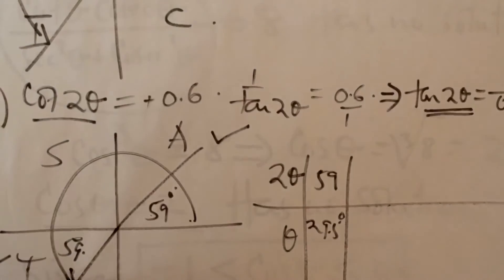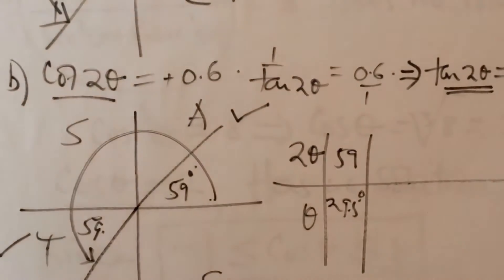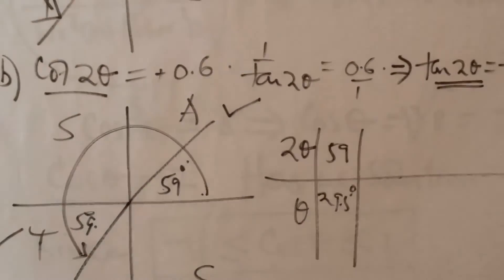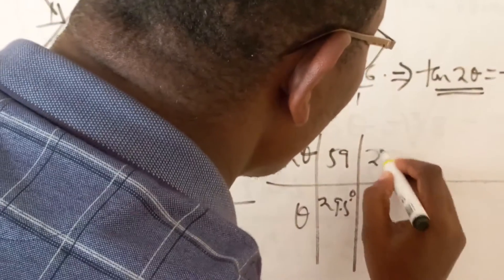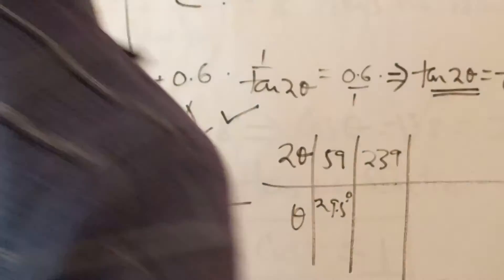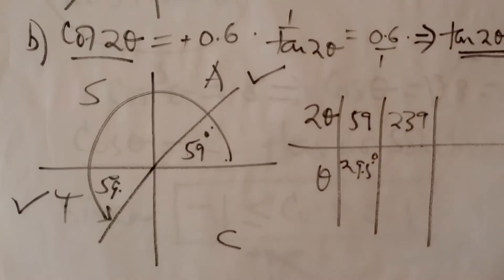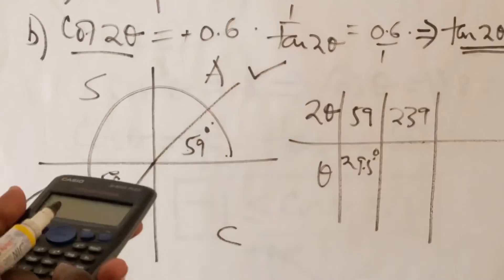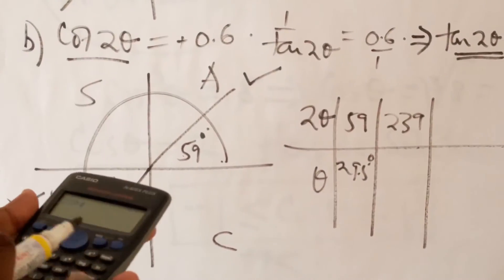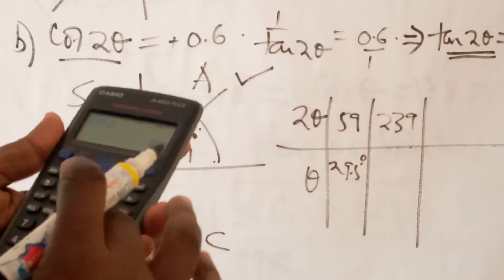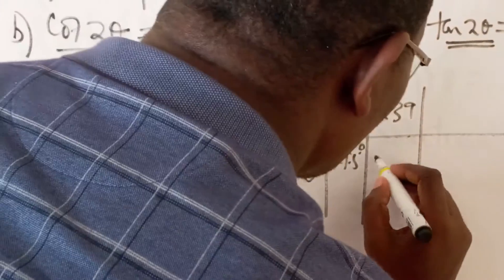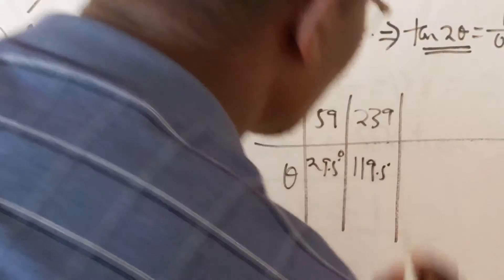At the same time, you can also have 2 theta to be 180 plus 59, which is 239. What is theta now? You divide that by 2, 239 divide by 2, which is going to give you 119.5.